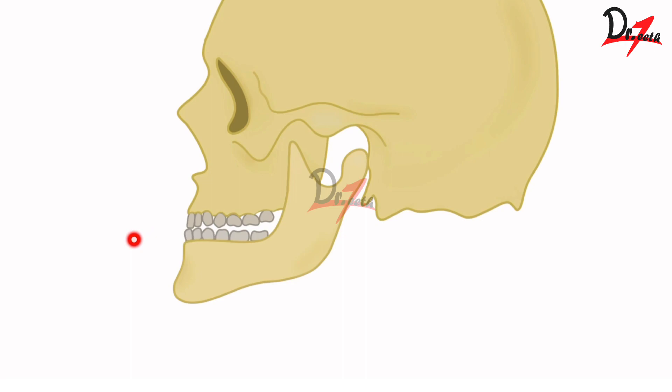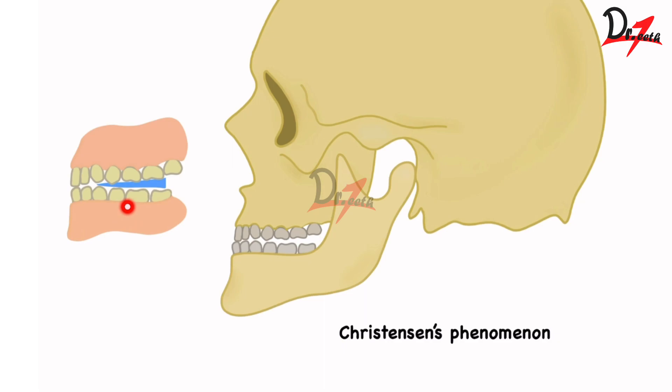If you have noticed natural dentition, when the mandible is moved forward, you find a wedge-shaped space in the posterior region. That wedge-shaped space is called Christensen's phenomenon. Now, if we have the same wedge-shaped space in our denture, the denture will lose stability — the upper denture will fall down and the lower denture will lift up.